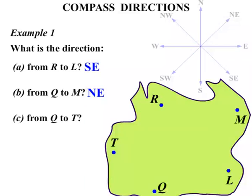What about from Q to T? Well, there's Q and we're going towards T, so in that direction there. We repeat that on the compass, that direction, N.W., North-West.